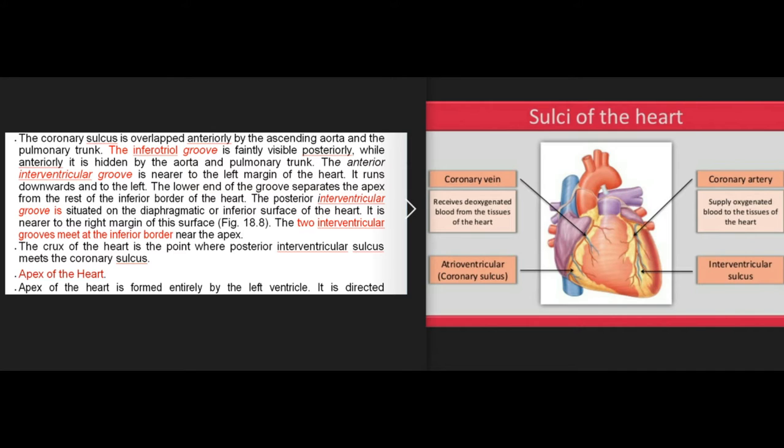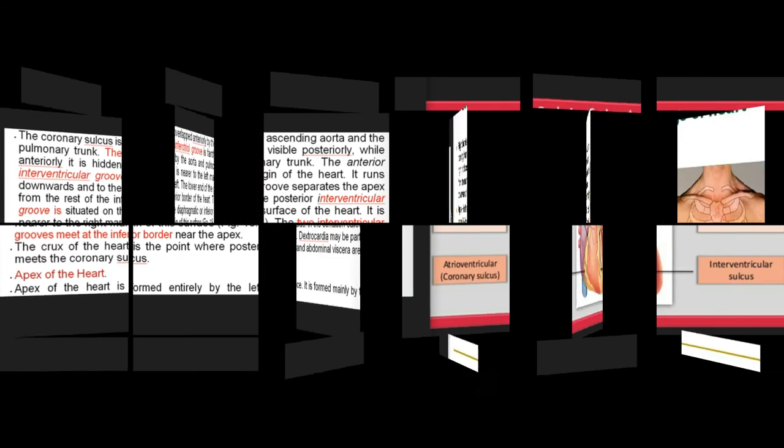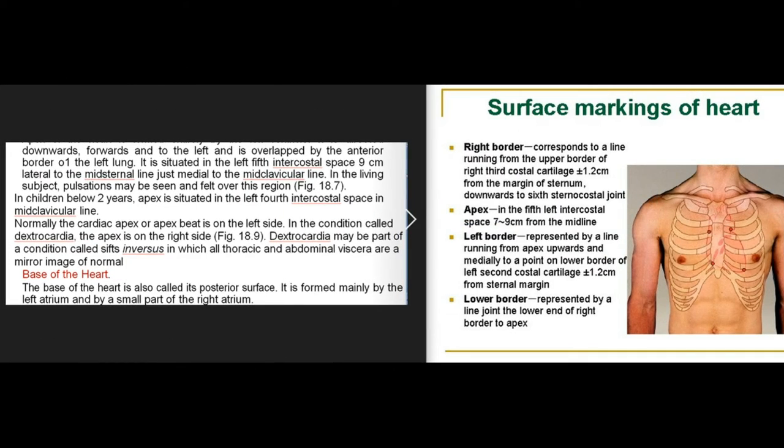Apex of the heart is formed entirely by the left ventricle. It is directed downwards, forwards, and to the left, overlapped by the anterior border of the left lung. It is situated in the left 5th intercostal space, 9 cm lateral to the midsternal line, just medial to the midclavicular line. In the living subject, pulsations may be seen and felt over this region. In children below 2 years, the apex is in the left 4th intercostal space in the midclavicular line. Normally the cardiac apex is on the left side; in dextrocardia the apex is on the right side, and may be part of situs inversus, where all thoracic and abdominal viscera are a mirror image of normal.